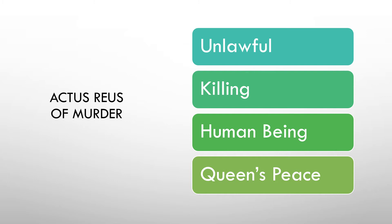We need first to explain all these elements. You can explain what 'unlawful' means and apply it to the scenario, explain what 'killing' is and apply it, and do the same for 'human being' and 'Queen's Peace'. It's entirely up to you, so long as all those elements are covered, you use cases, you apply it well, and you analyse as you go.